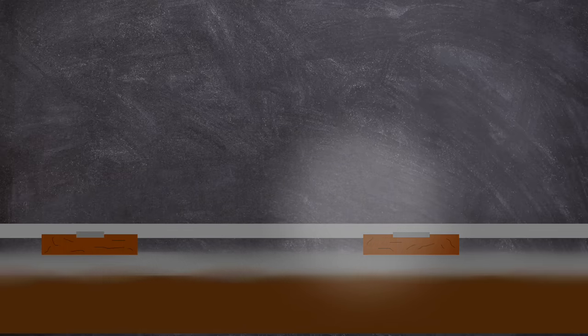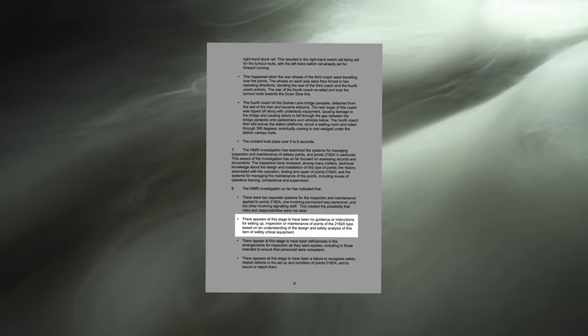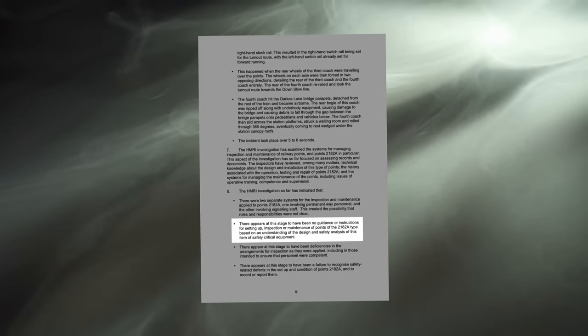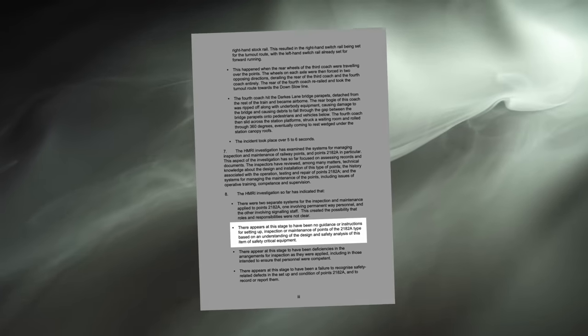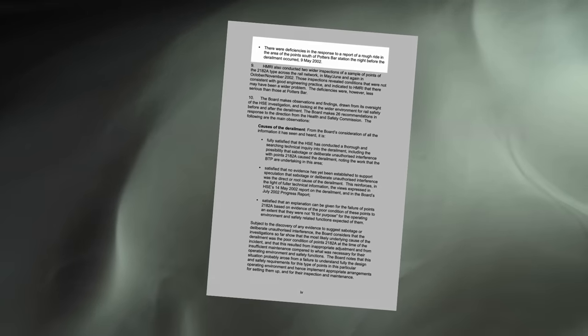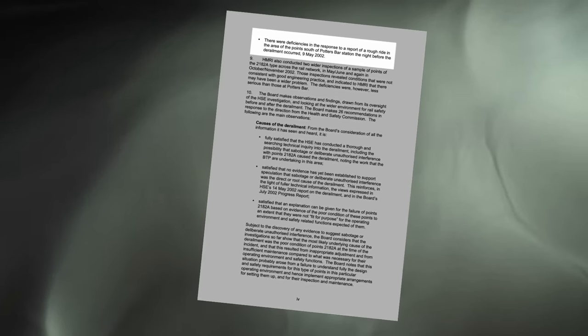The HSC would summarise this point. There appears at this stage to have been a failure to recognise safety-related defects in the set-up and condition of points 2182A, and to record or report them. There were deficiencies in the response to a report of a rough ride in the area of the points south of Potter's Bar station on the night before the derailment occurred, the 9th of May 2002.